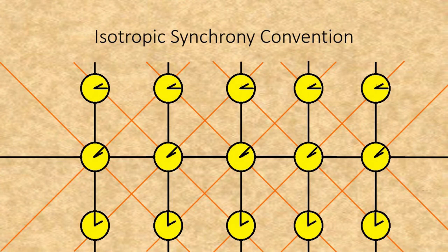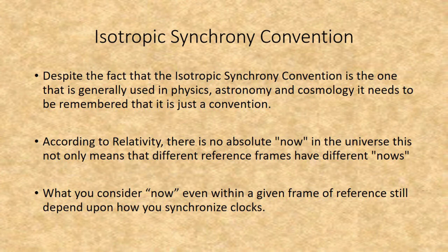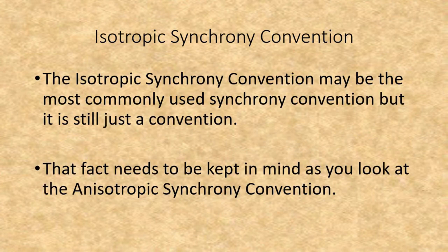In the isotropic synchrony convention, clocks are synchronized across space but not time, such that any time you look at a distant object, you are looking into the past. This also means that what is considered to be happening 'now' in distant parts of the universe is totally inaccessible. Despite the isotropic synchrony convention being generally used in physics, astronomy, and cosmology, it needs to be remembered that it is just a convention. According to relativity, there is no absolute 'now' in the universe — this not only means different reference frames have different nows, but even within a given reference frame, what you consider 'now' still depends upon how you synchronize clocks.